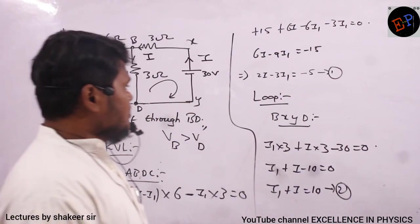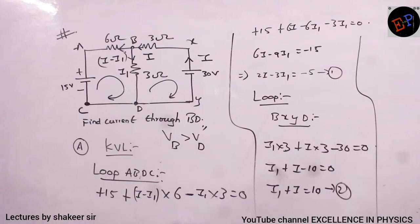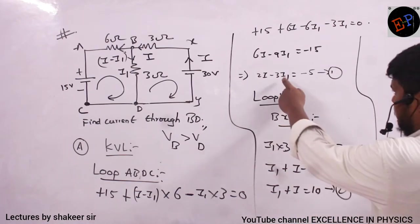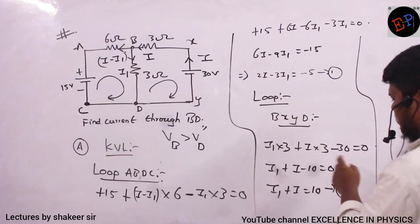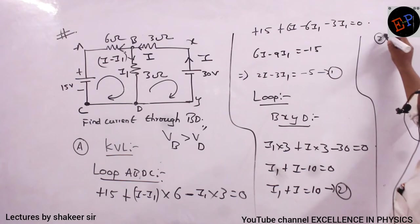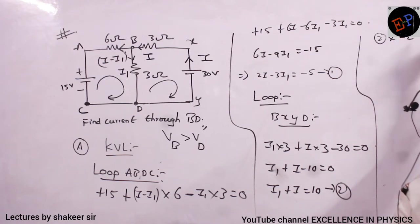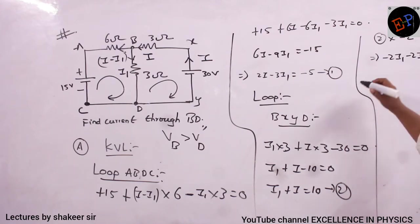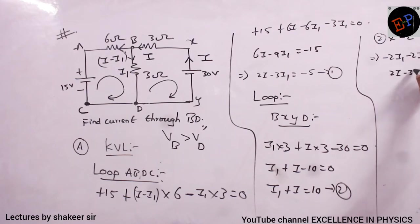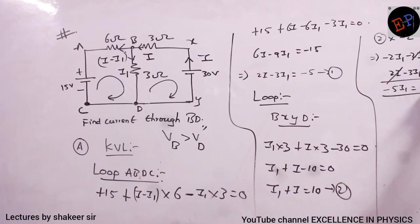Solving the two equations: multiply equation 2 by −2: −2I1 − 2I = −20. Adding to equation 1 (2I − 3I1 = −5): the I terms cancel, giving −5I1 = −25, so I1 = 5 amperes. This is the current through branch BD.